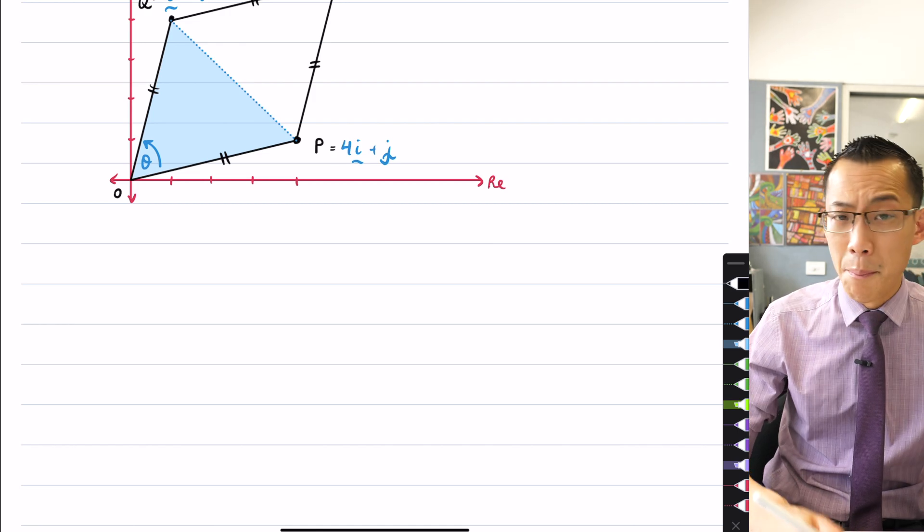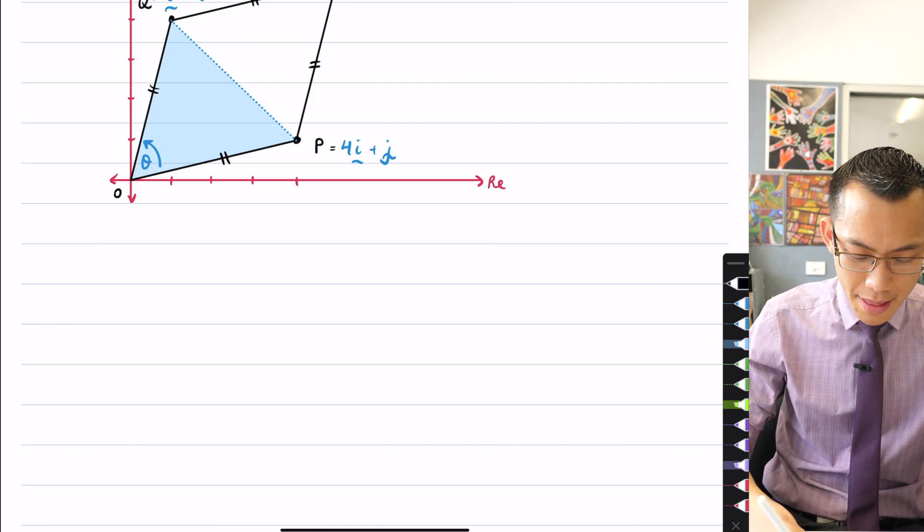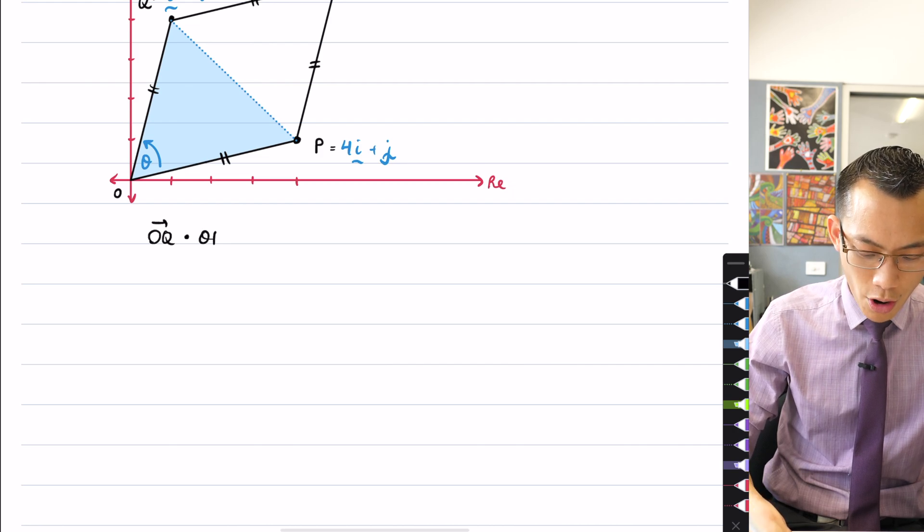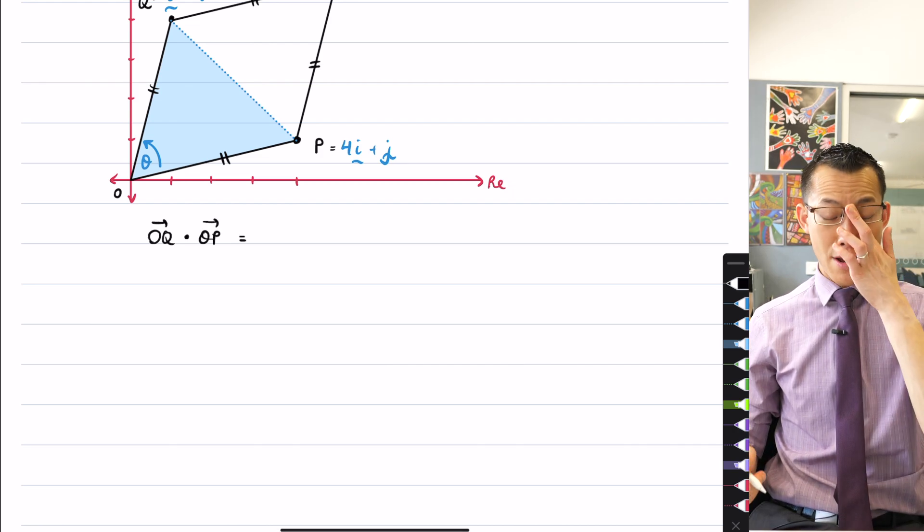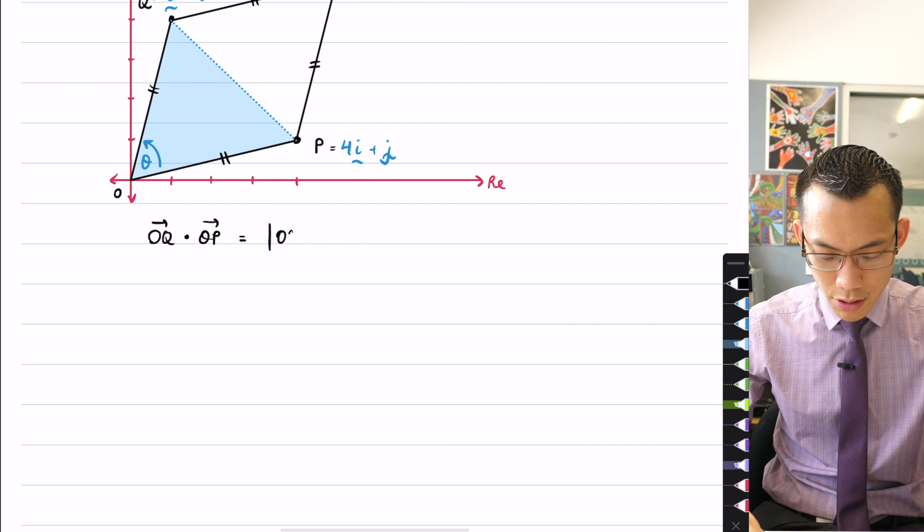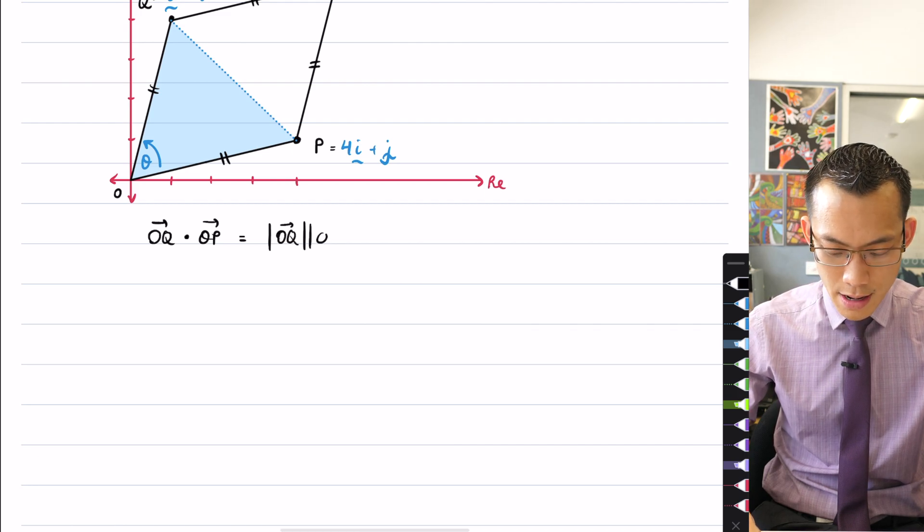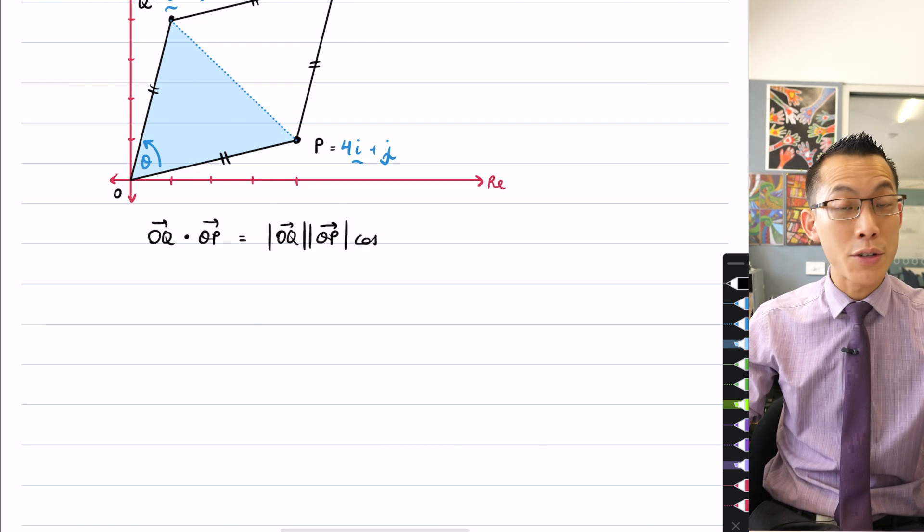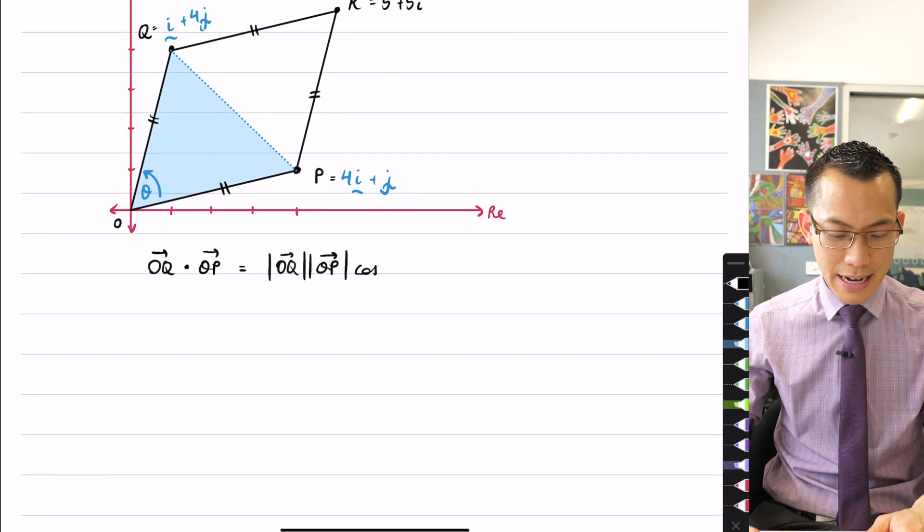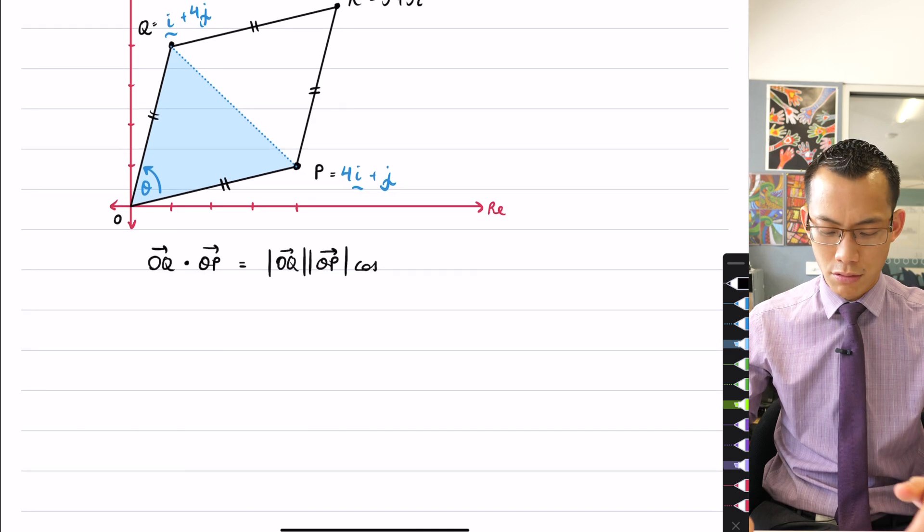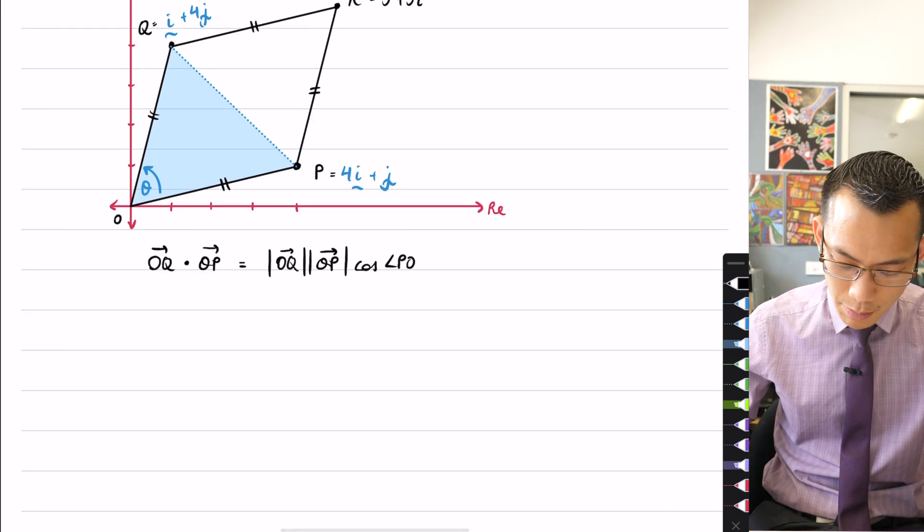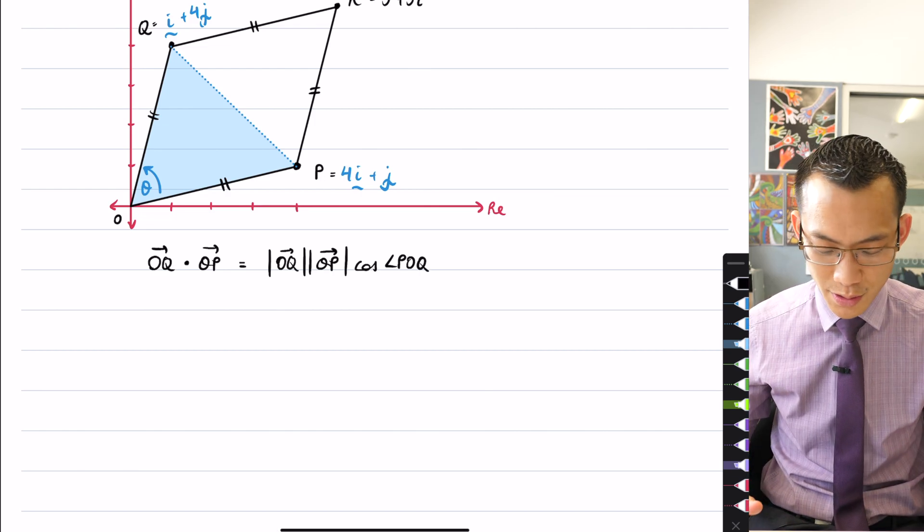So how am I going to write this out? Well, I would say, by the definition of the dot product, that OQ, if I take the dot product of that with OP, what's that going to be equal to? It's the two magnitudes, OQ, OP, multiplied by cos of the angle in between, which I'm just calling theta, but it is POQ. So I'm just going to label that as POQ here, because everything in this line is in terms of p's and o's and q's.